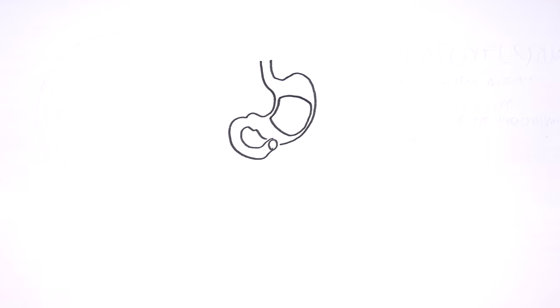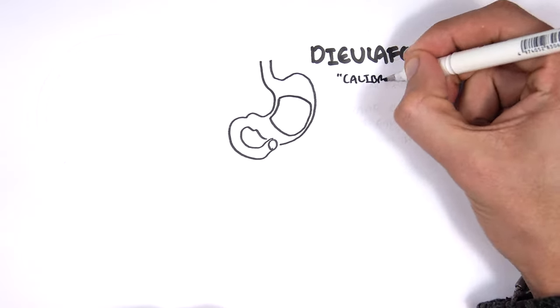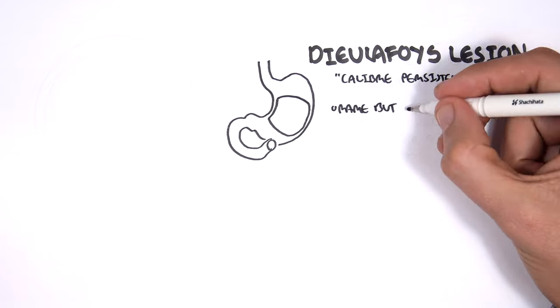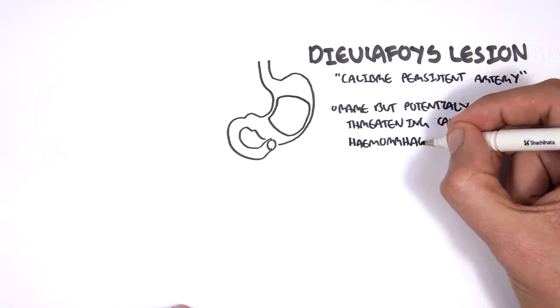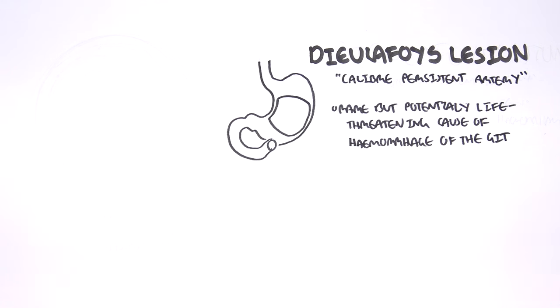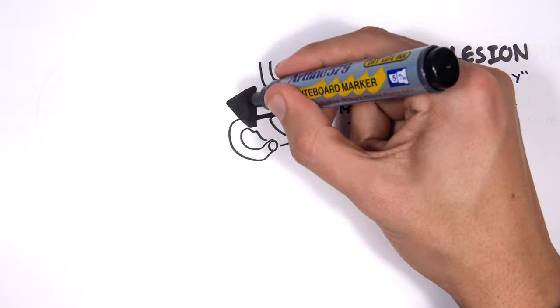The next condition is Dieulafoy's lesion, which is also known as a caliber persistent artery. It's a rare but potentially life-threatening because it causes hemorrhage of the GIT. As the other name suggests, caliber persistent artery, it has to do with the artery that supplies the stomach.